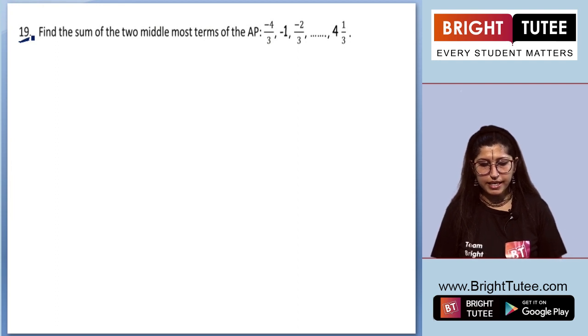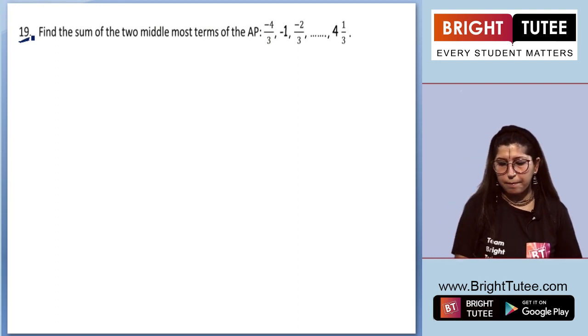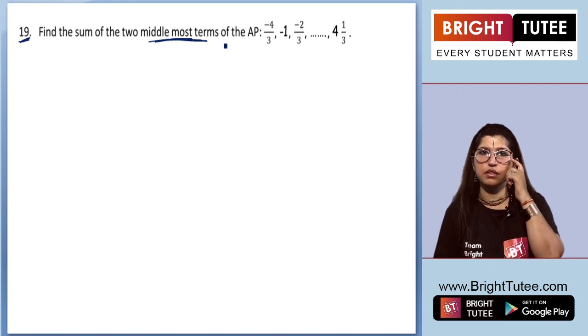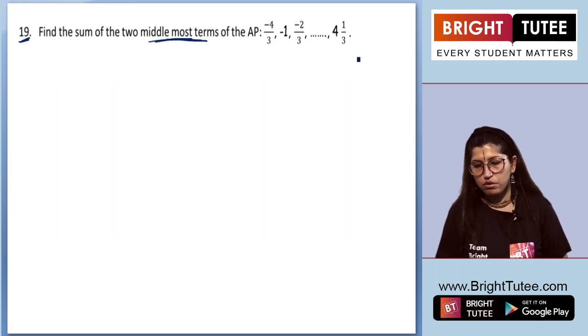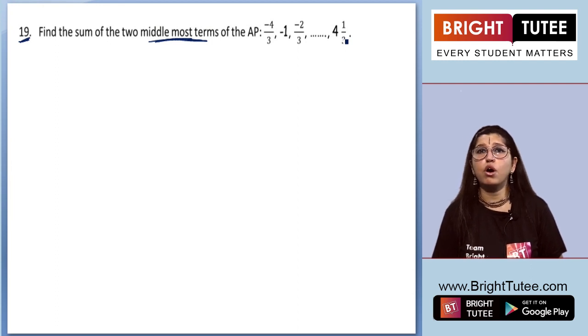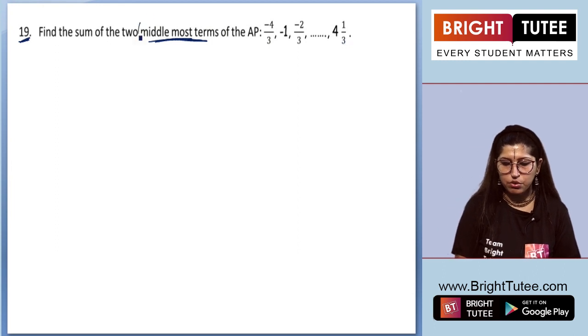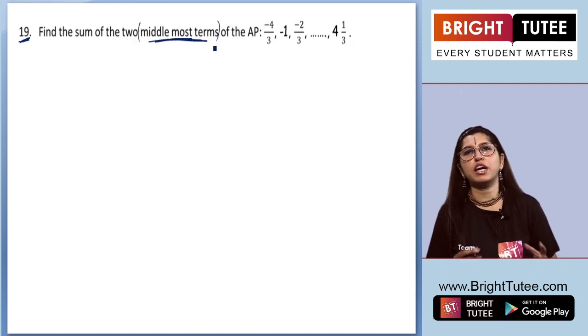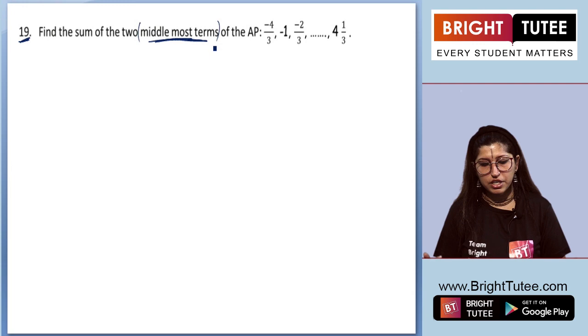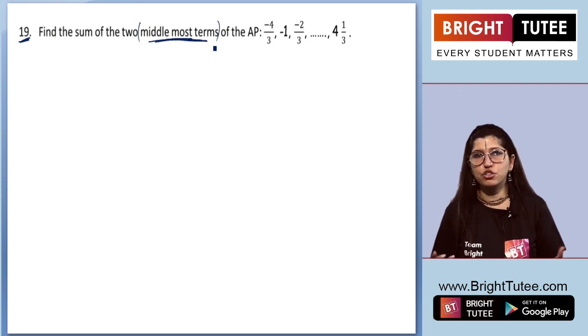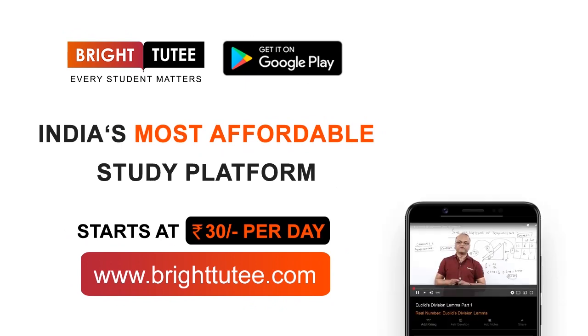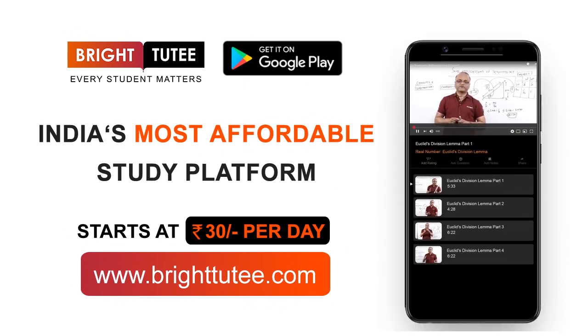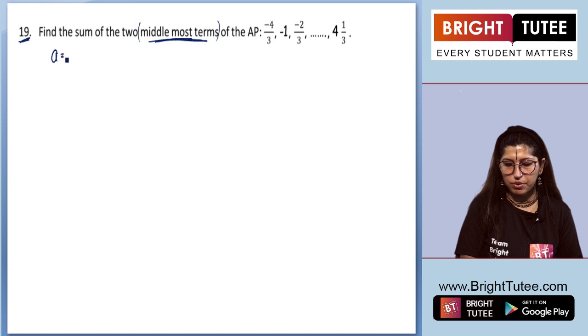So question 19 says, find the sum of two middle most terms of the AP. They are asking about two middle most terms. We know that these are the terms but we don't know how many terms are there so that we can find the middle most terms. Students get confused about what to do to find middle most terms. So if we need to find middle most terms, for sure we need to find N first. Now, let's start solving this question.